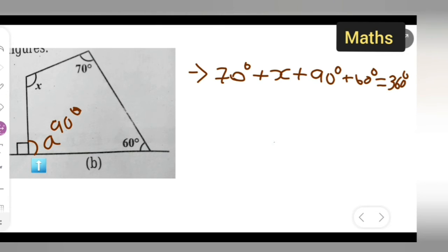Now we need to add all this and see what answer we are going to get. 70 plus 90 will give you 160. 160 plus 60 is going to give you 220. So I can write down 220.